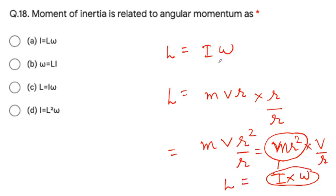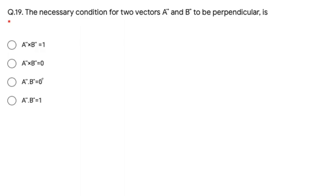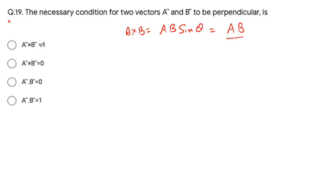The moment of inertia is related to angular momentum as L = Iω. From the previous formula L = mvr, multiplying and dividing by r gives mr² × (v/r) = I × ω, where mr² is the moment of inertia and v/r is angular velocity omega. So angular momentum equals moment of inertia into angular velocity. The correct option is option C.